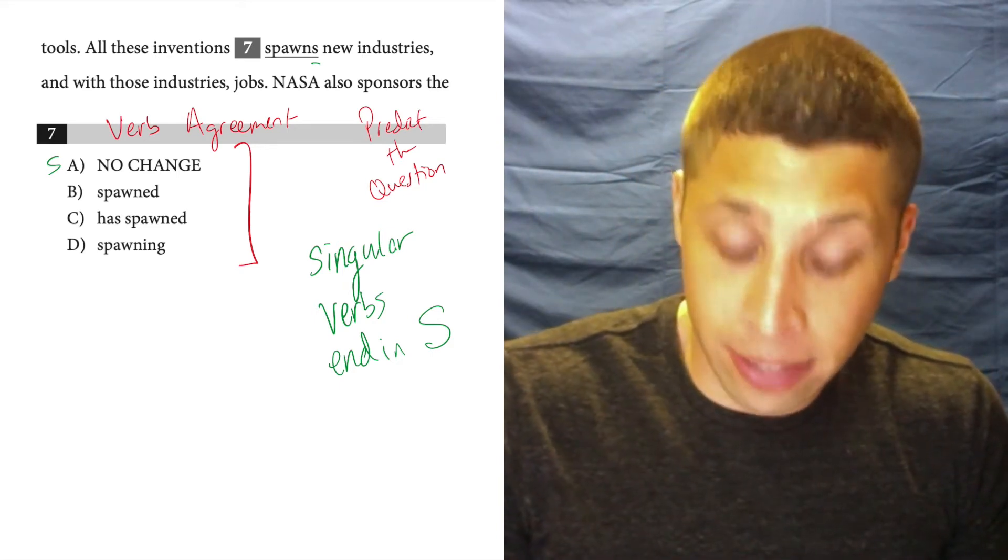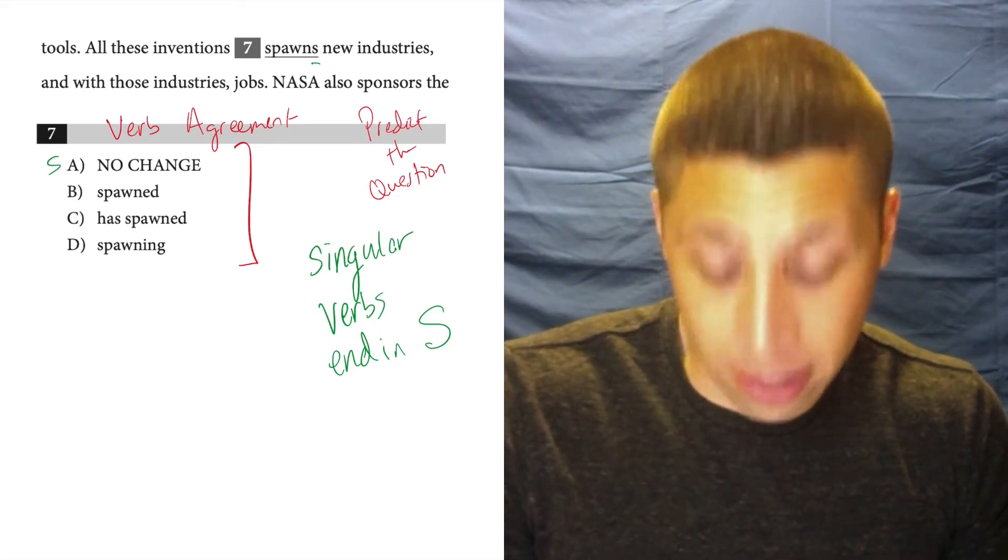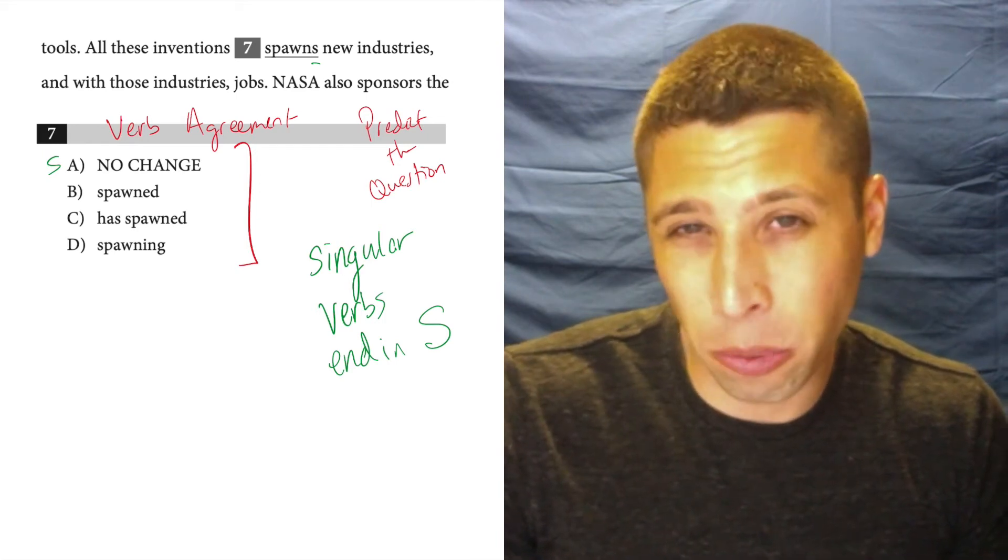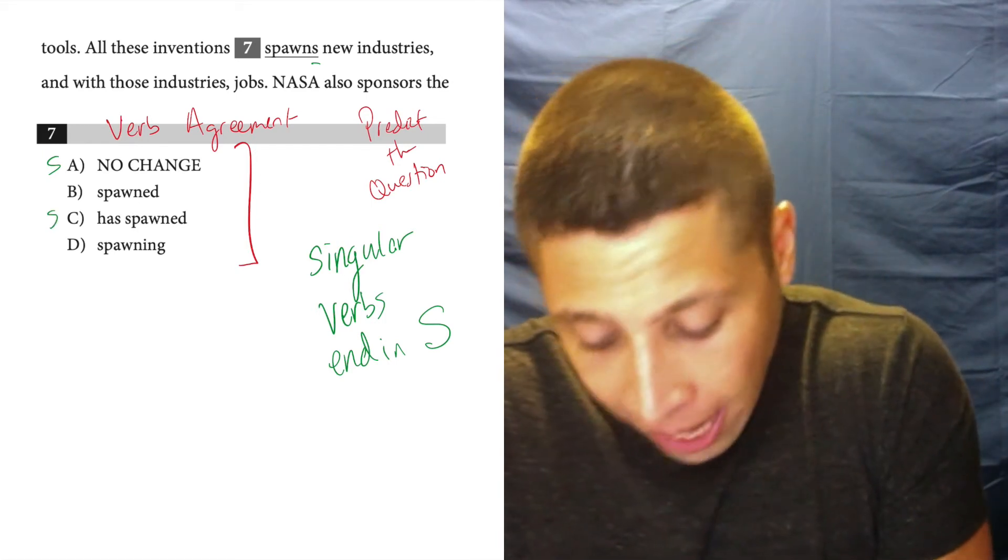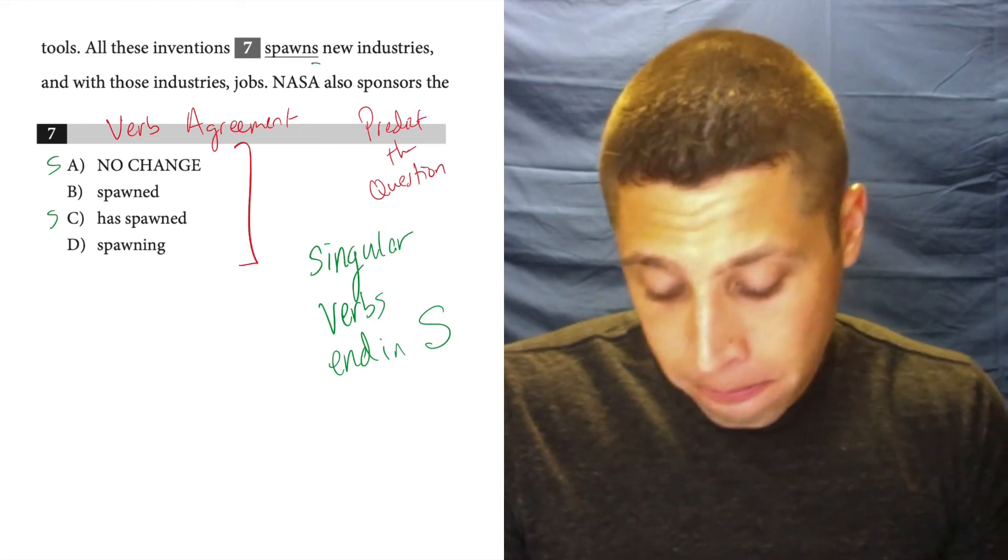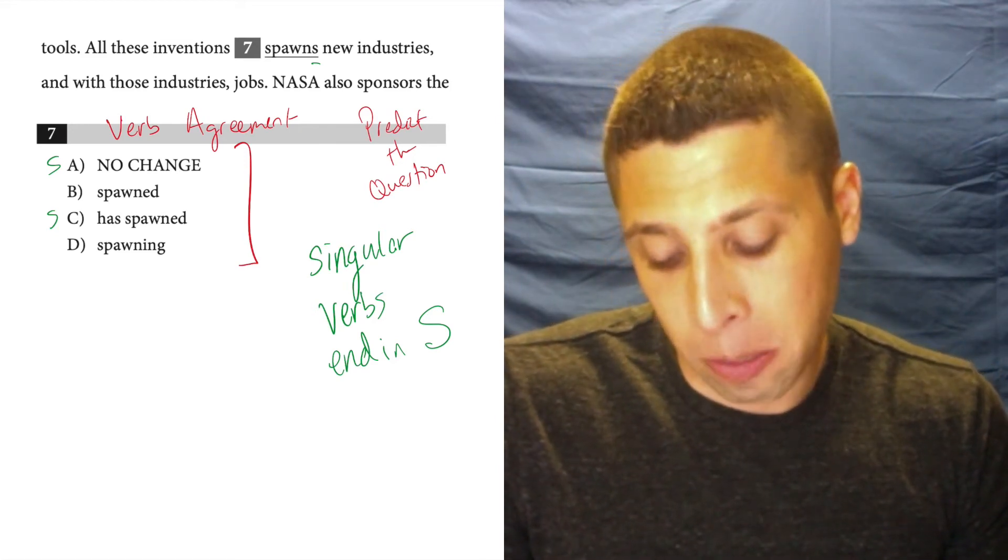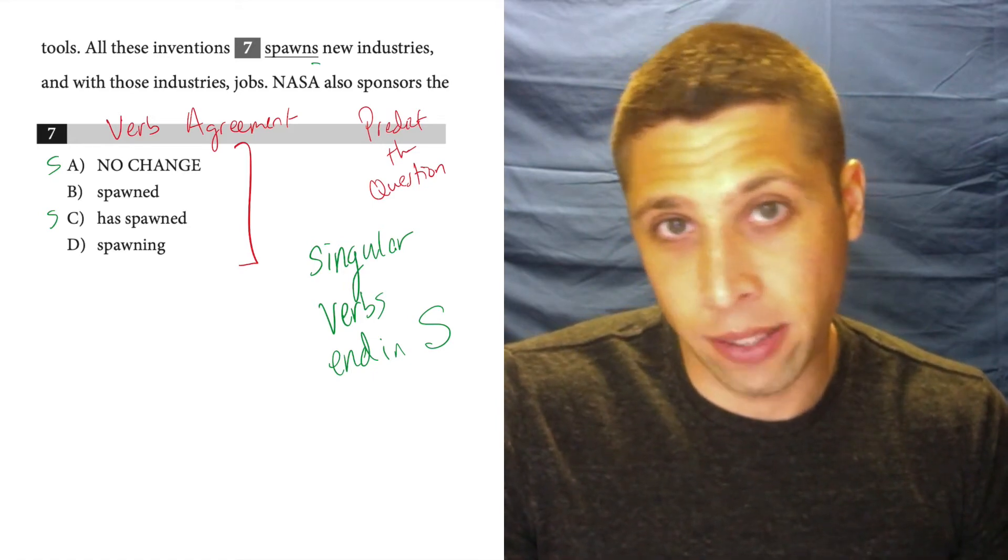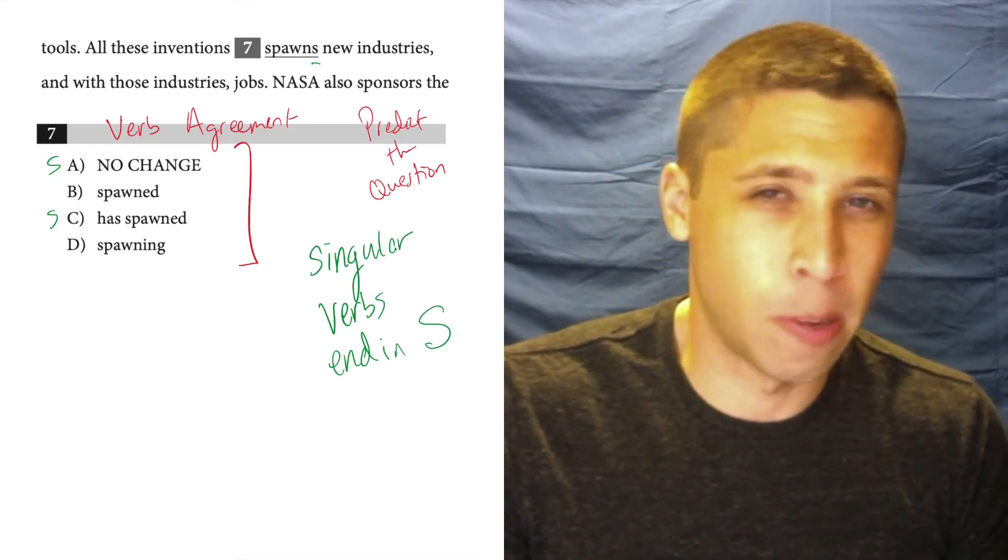Now choice B doesn't end in S. Choice C kind of does because the word that we're really concerned with here is has, right? Has is the singular. Have would be the plural. But then D also kind of is this weird thing. It's not spawnings, I guess. So that means it's plural.